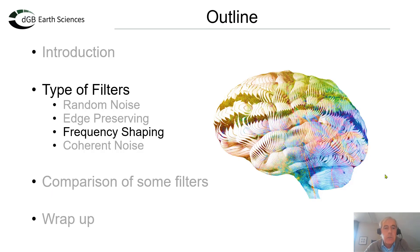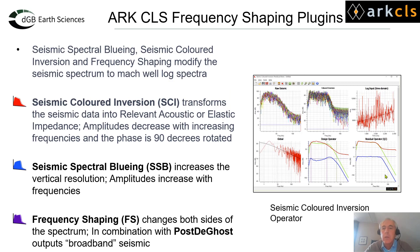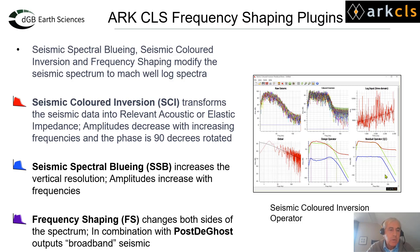Next on our list is frequency shaping, and for this we're going to look at a number of plugins available through our partnership with ArcCLS: Seismic Spectral Bluing, Seismic Colored Inversion, and frequency shaping, which modify the seismic spectrum to match well-log spectrum. Colored inversion transforms the seismic into relative acoustic or relative elastic impedance, and the amplitudes of the output decrease with increasing frequencies.